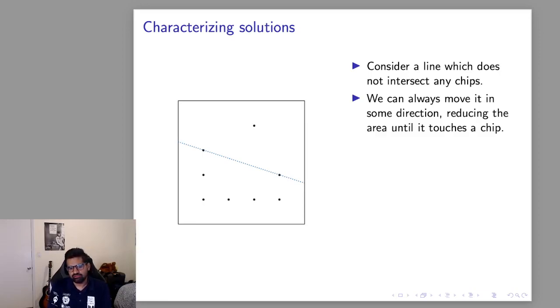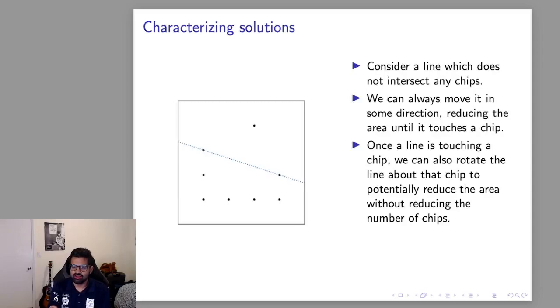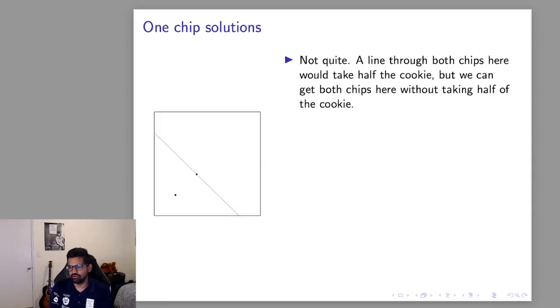Now this sample is very suggestive. It shows a line that goes through two chips so a very natural question is can we always rotate this line and get an optimal answer that passes through two chips. And as you can probably tell by the way I'm phrasing this question the answer is no and this is what we on the judging team call a corner case.